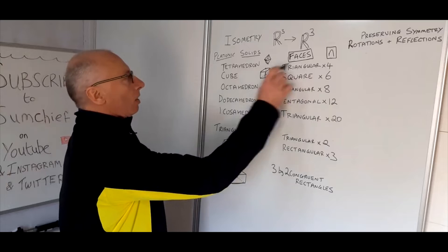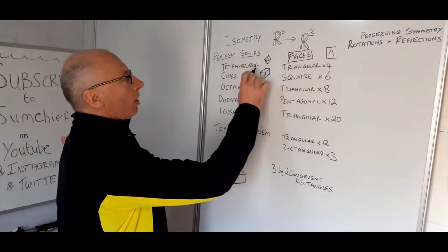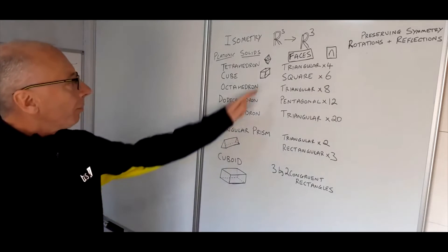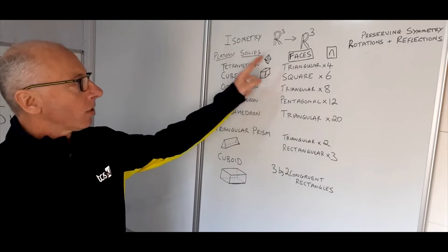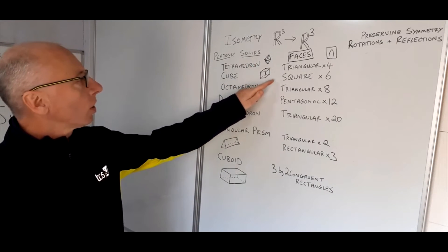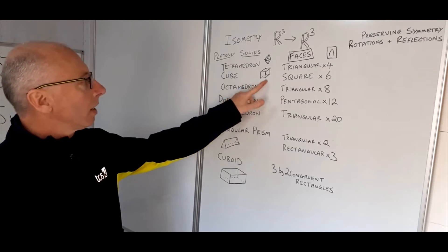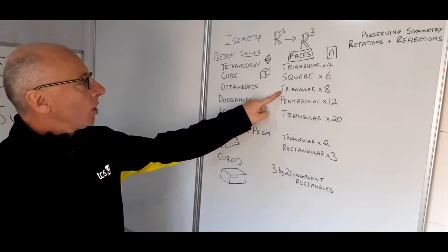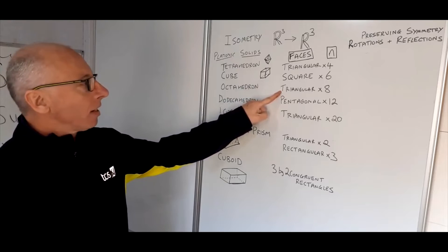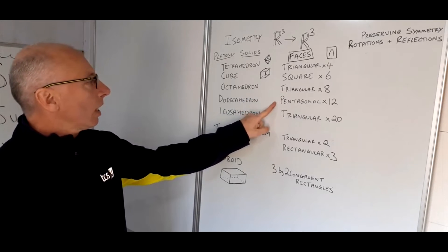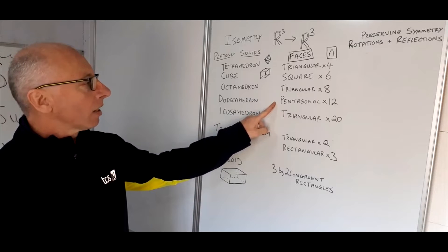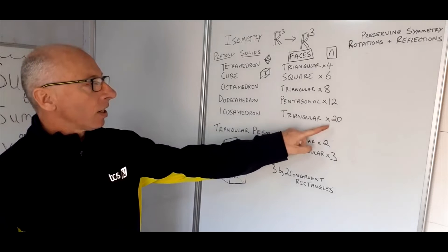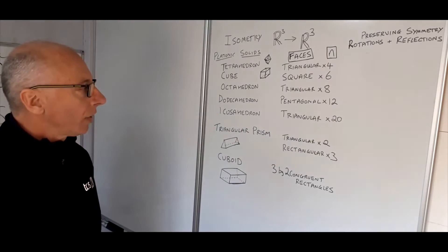The faces of each Platonic solid: the tetrahedron has four triangular faces; the cube is made up of squares; the octahedron has eight triangular faces; the dodecahedron has 12 pentagonal faces; and the icosahedron is a solid made up of 20 triangular faces.